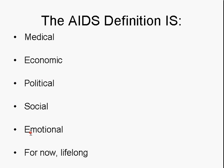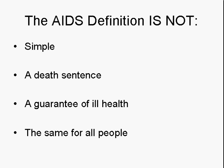The AIDS definition is a medical definition, definitely. But the fact that it's linked to benefits also makes it an economic condition and a political condition — it has to do with the government deciding to respond or not to people living with HIV and AIDS. None of us live in a vacuum, and the AIDS definition is a social one, and definitely an emotional one — for many people, it brings up strong emotions. At the current moment, the AIDS definition is a lifelong one, and once that mark is checked on your medical record, it's never unchecked — though that might change in the future. The AIDS definition is not simple, not a death sentence, not a guarantee of ill health. Just because someone has been diagnosed with AIDS doesn't mean they feel bad. It's not the same for all people.